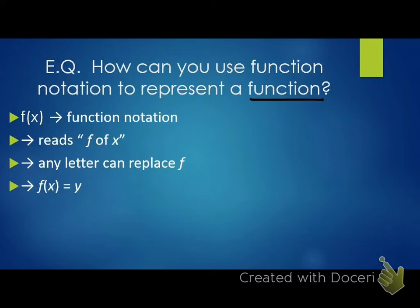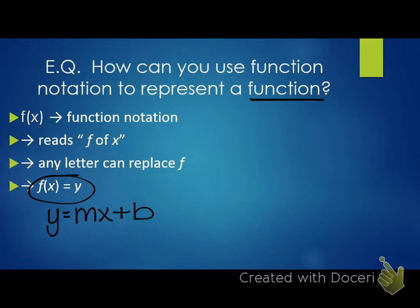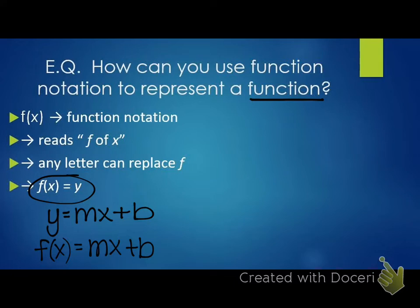Here is the most important thing: F of X is equivalent to the variable Y. For example, last week we talked about Y equals MX plus B — the slope-intercept form of a line. If I were to write this as F of X equals MX plus B, that's the same thing. F of X and Y are interchangeable. Whether I write Y equals MX plus B or F of X equals MX plus B, they mean the same thing. Y and H of X are interchangeable as well.